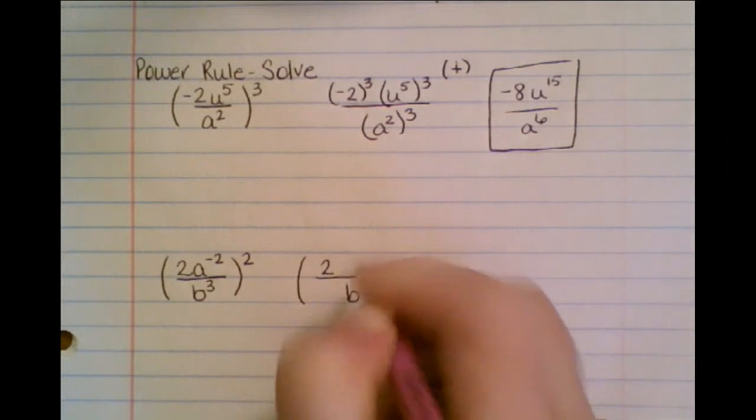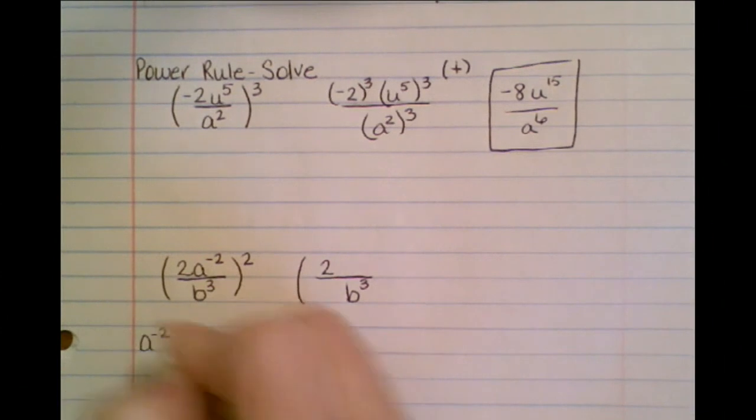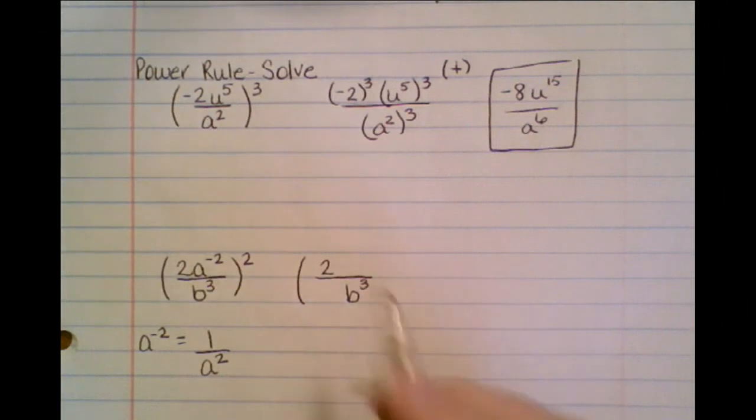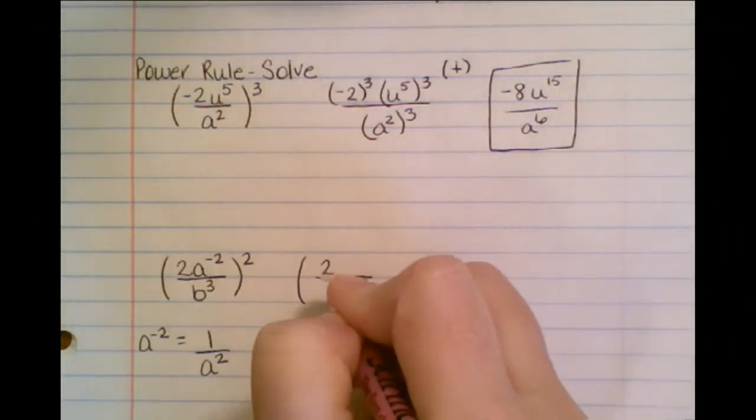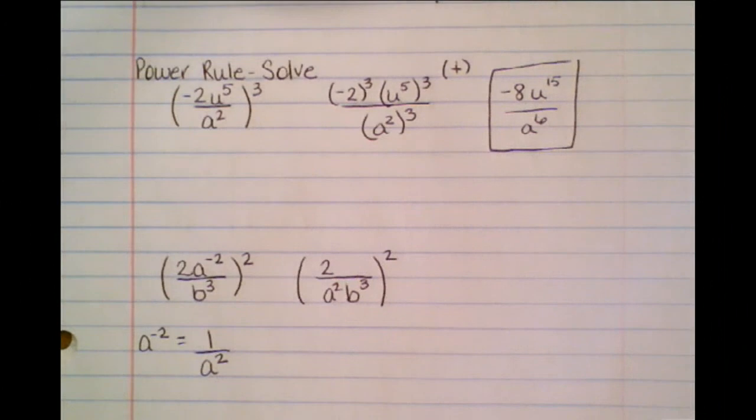Now remember, in order to make this positive, we have to take and put it over 1. So if I have a to the minus 2 and I want it to become positive, I get 1 over a squared. So when I look at this, that means now that a squared is going to be down here on the bottom, and then I want to square this whole thing.